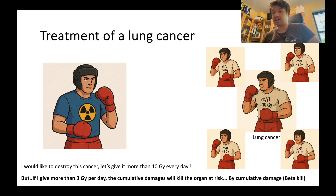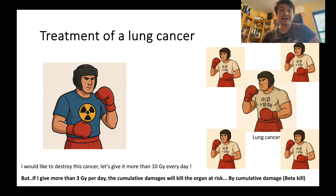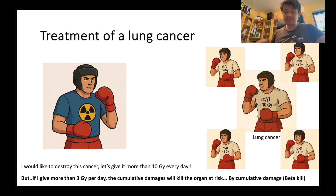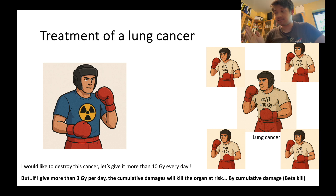For lung cancer, you have your cancer with a high alpha-beta ratio of 10 gray, but around it is normal lung tissue with an alpha-beta of 3 gray that you want to spare. If you give more than 10 gray per fraction, all the normal tissue will get massive damage from the beta killing. So to spare maximum normal lung tissue, we give less than 3 gray — for example, 2 gray per fraction for lung cancer.